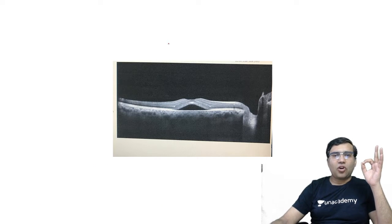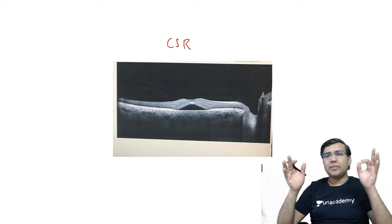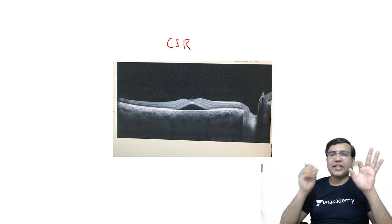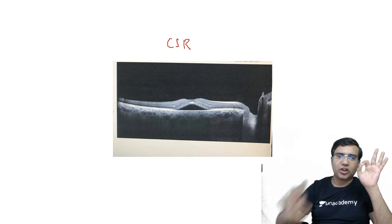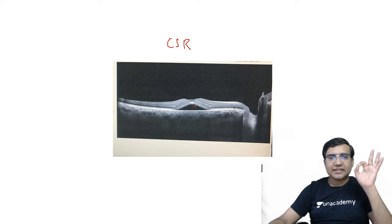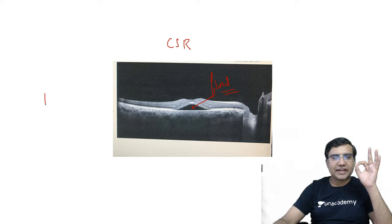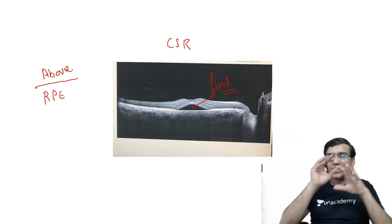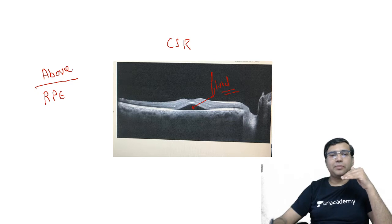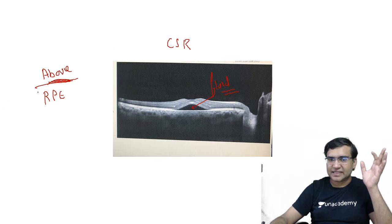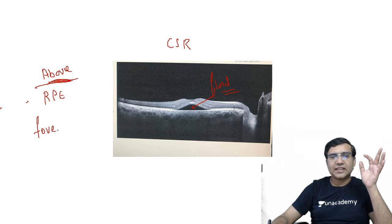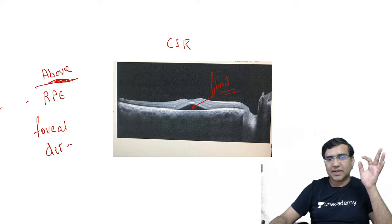This picture shows central serous retinopathy. It is important to differentiate it from cystoid macular edema. In central serous retinopathy, there is fluid collection between the retinal pigment epithelium and the layers above it — no cystic spaces elsewhere. Only above the RPE is there fluid. This is also called serous foveal retinal detachment.